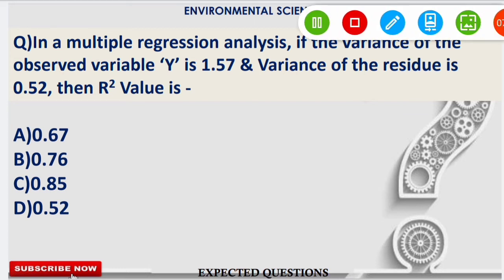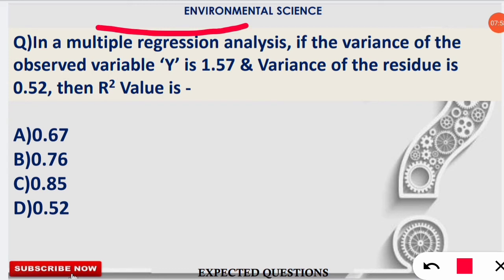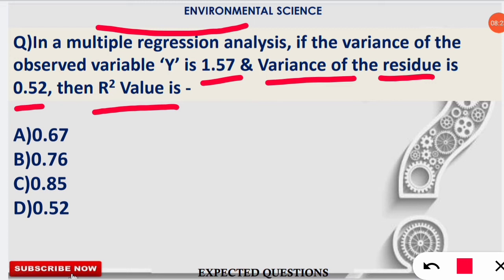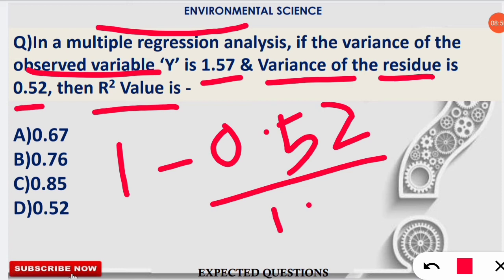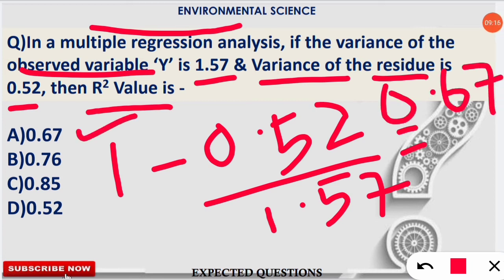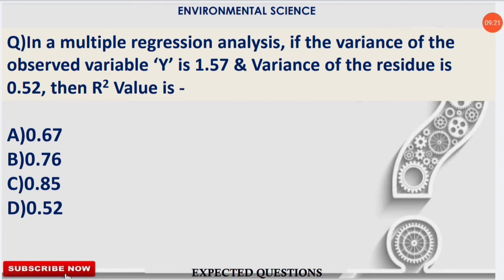The next question is from multiple regression analysis. Don't worry if you don't know about it — here is a simple formula. If the variance of the observed variable (y) is 1.57 and the variance of the residue is 0.52, what is the R-square value? The formula is: R² = 1 minus (variance of residue / variance of observed variable). So: 1 − (0.52 / 1.57) = 0.67. Option A is correct. Just remember this formula.